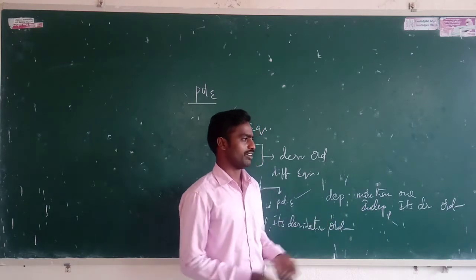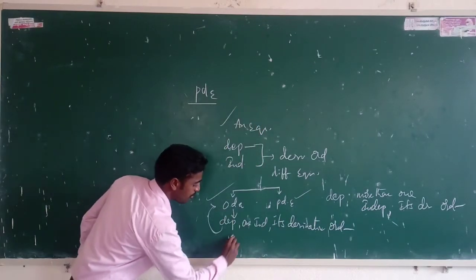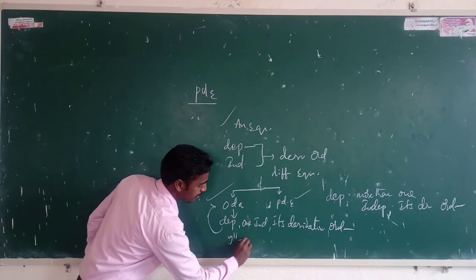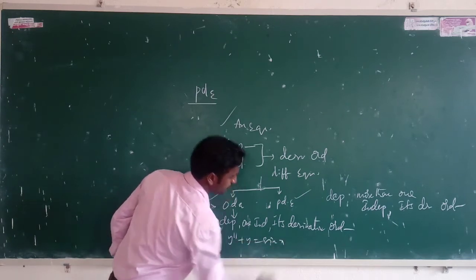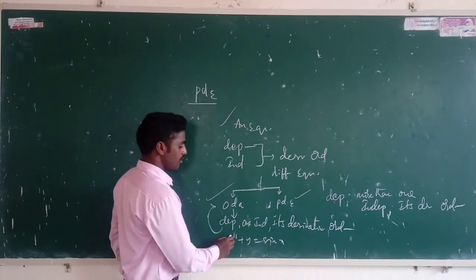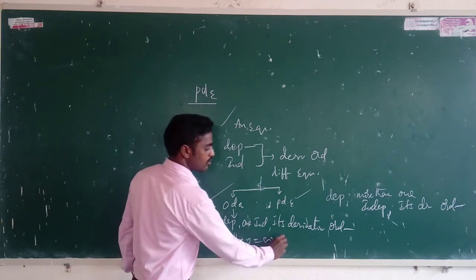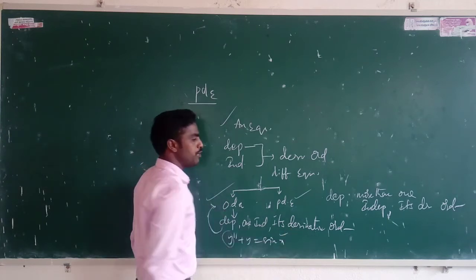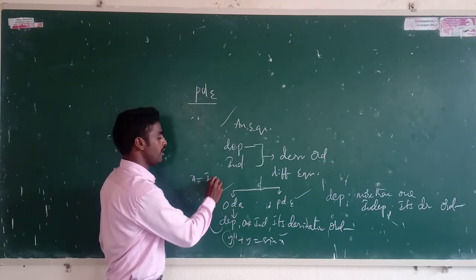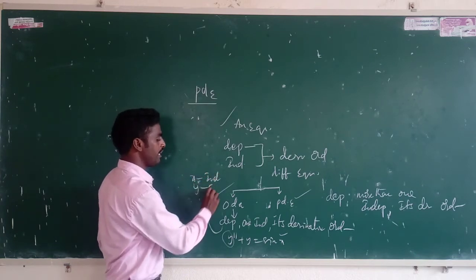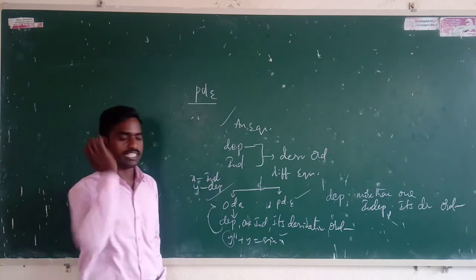For example, consider the equation y' = y. Here y is the dependent variable and x is the independent variable. So we have one independent variable x and one dependent variable y. This is an example to illustrate the concept.